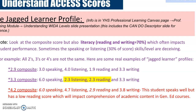To understand the ACCESS score you see in Synergy, it's really important to dive deeper. Keep in mind that level threes, for example, are not all equal. We have something called the jagged learner profile. A student with a 3.3 composite score might present as a level six in speaking — communicating almost like a gen ed student — but their listening and reading scores at 2.3 indicate their ability to comprehend content is more like a level two.